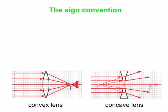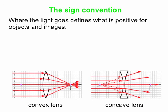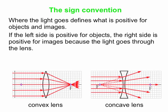Let's talk about sign conventions. We follow the light to keep track of signs. Usually, we start with the object on the left, and light travels to the right and interacts with the lens. With mirrors, the reflected light went back to the left, so where the light was defined positive. For lenses it's the opposite — light passes through, so the right-hand side is positive for images, and the left-hand side is negative for images.